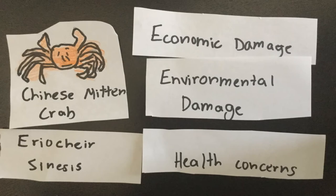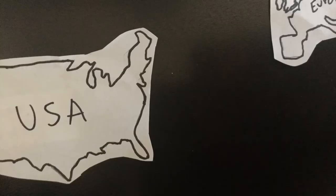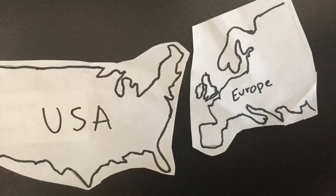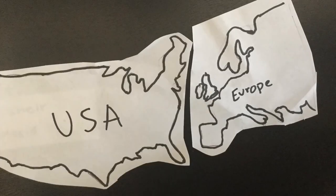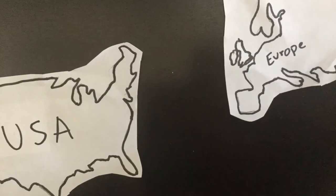They damage rice crops and transfer diseases — they are in fact the host for the human lung fluke. These crabs had no predators when they were introduced, which was one of the reasons they grew so fast and destroyed so many species.